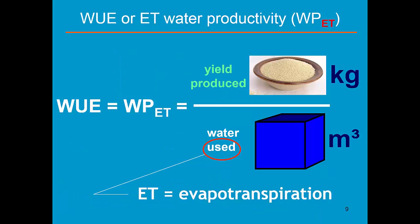The ET water productivity expresses the yield which was produced per cubic meter of water lost by evapotranspiration at field level.